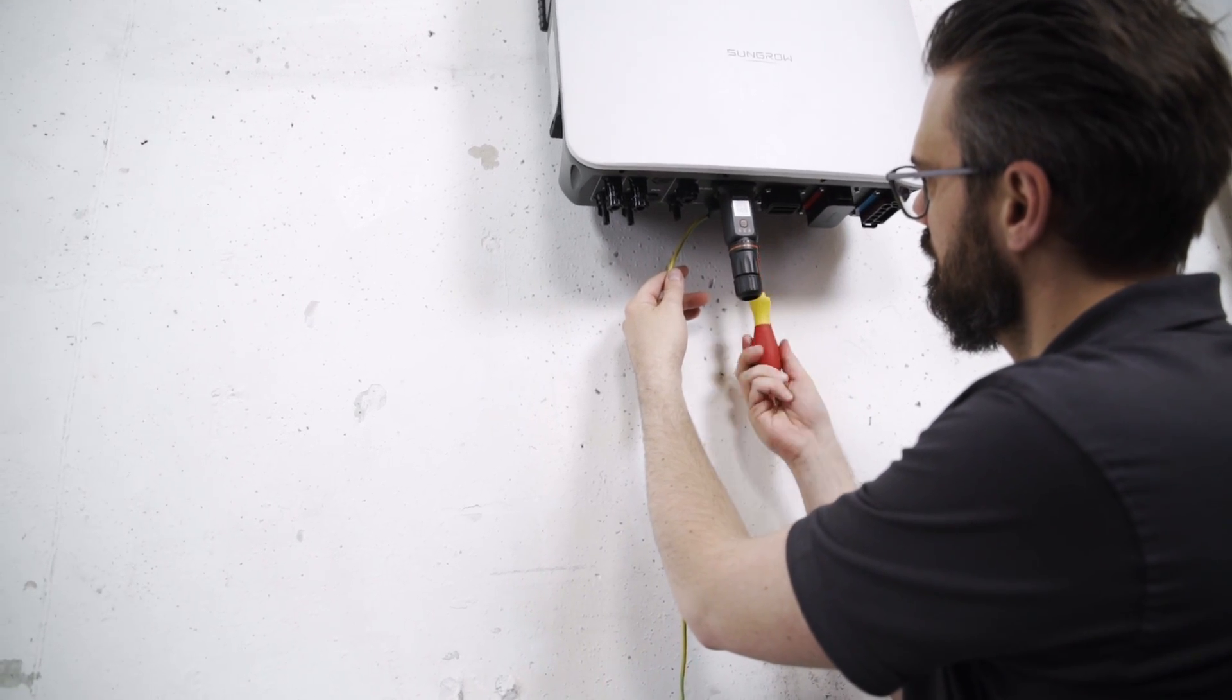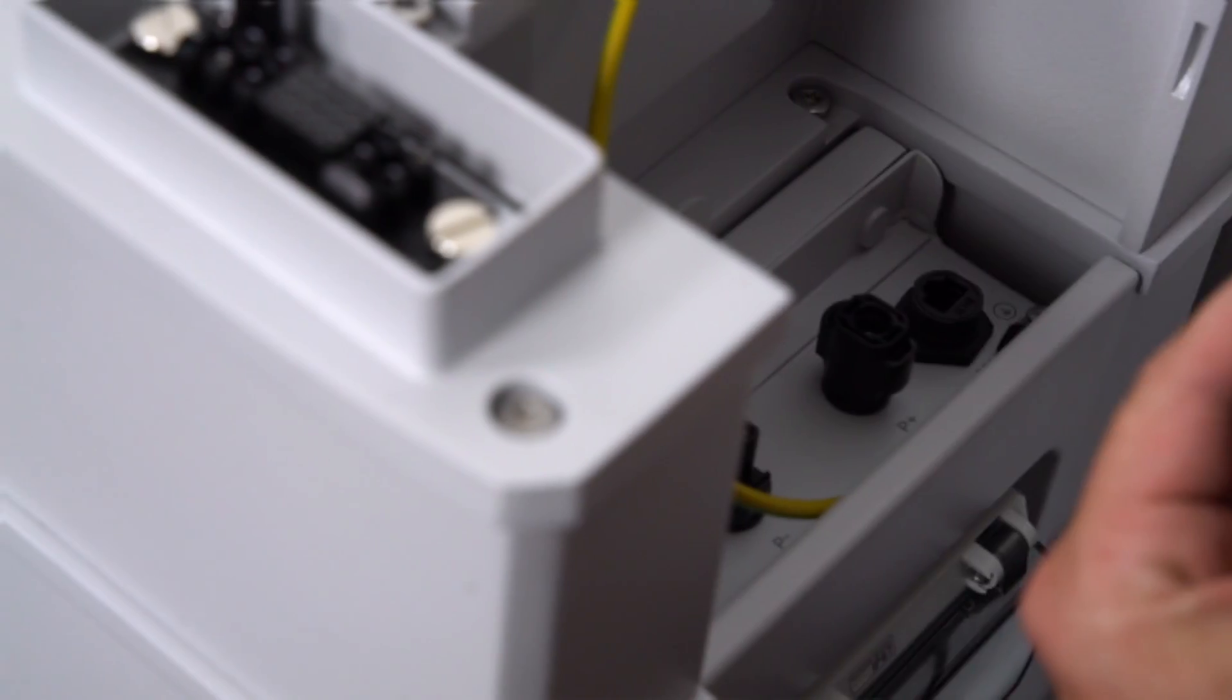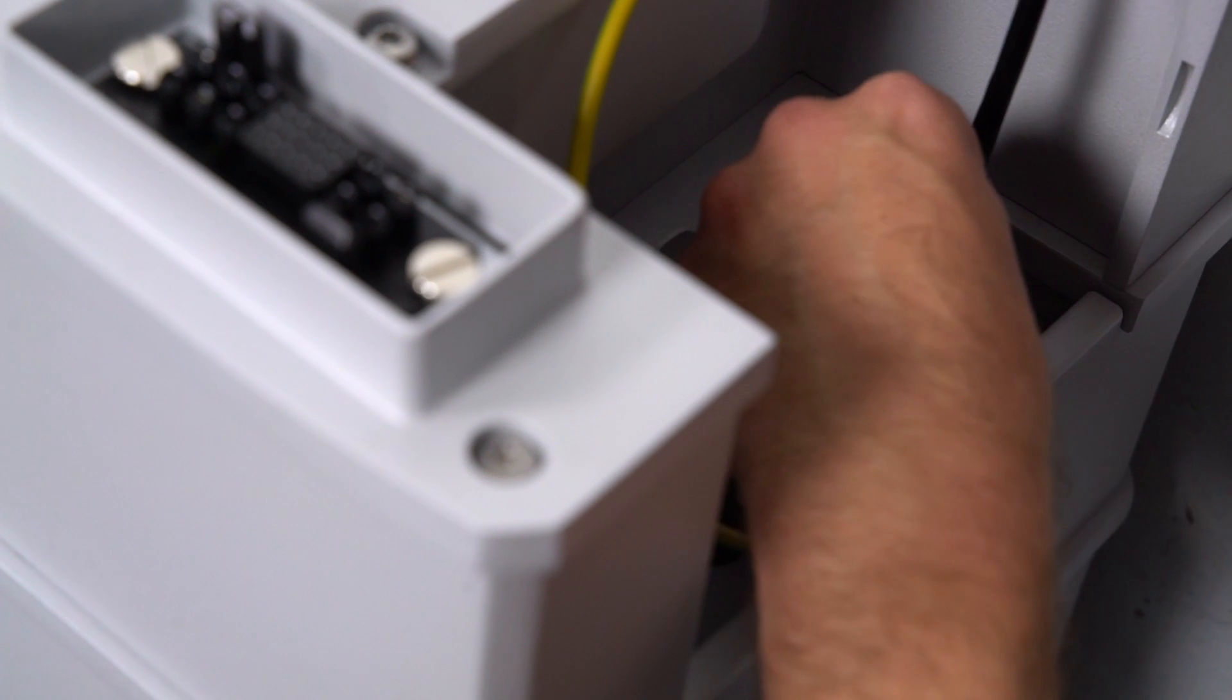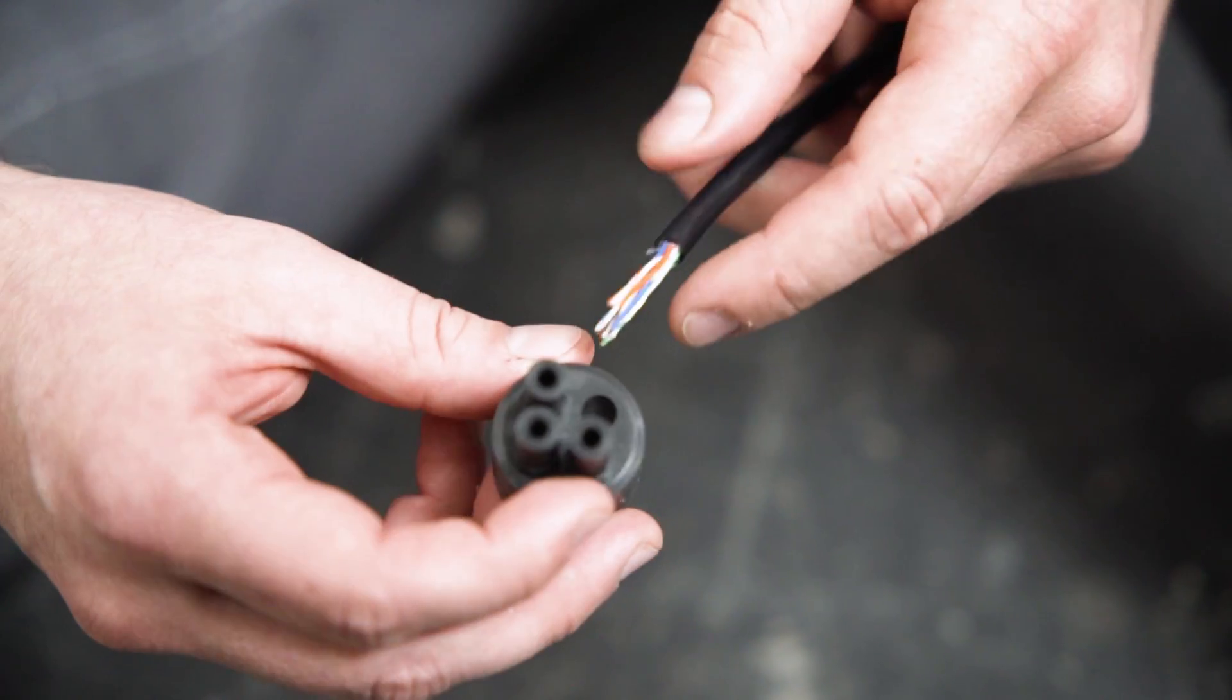In the next step, the battery needs to be connected to the communication plug of the three-phase hybrid. Take the pre-assembled communication plug and connect it to the battery. The other end of the cable needs to be connected to the BMS CAN interface of the communication plug of the three-phase hybrid.